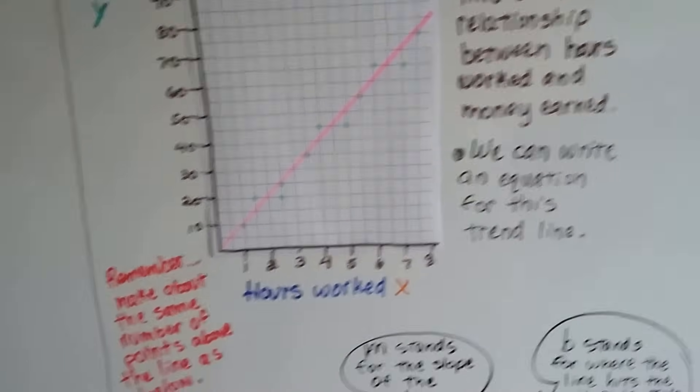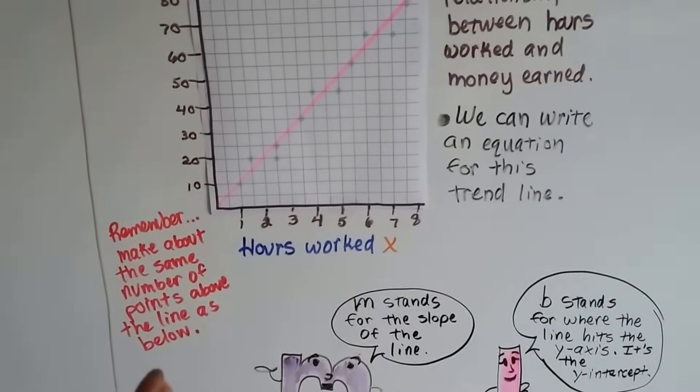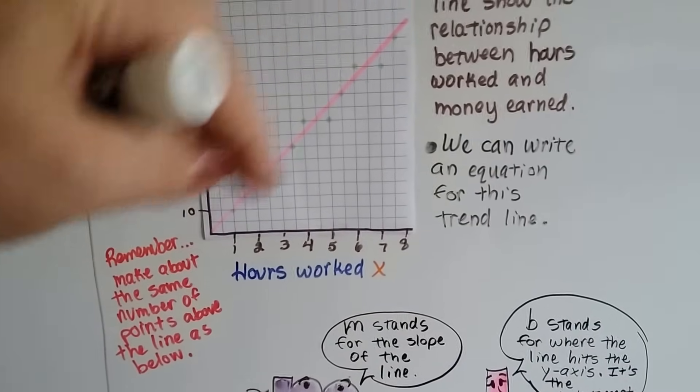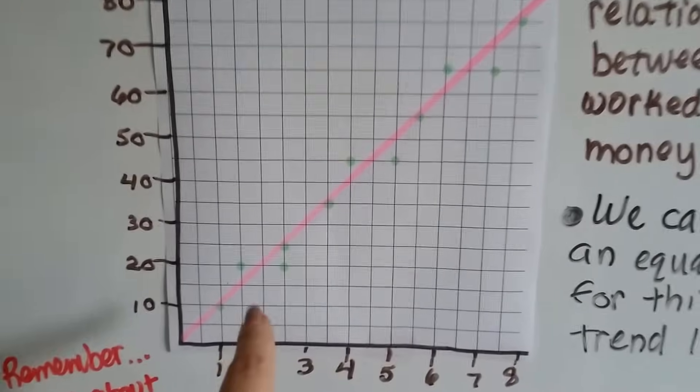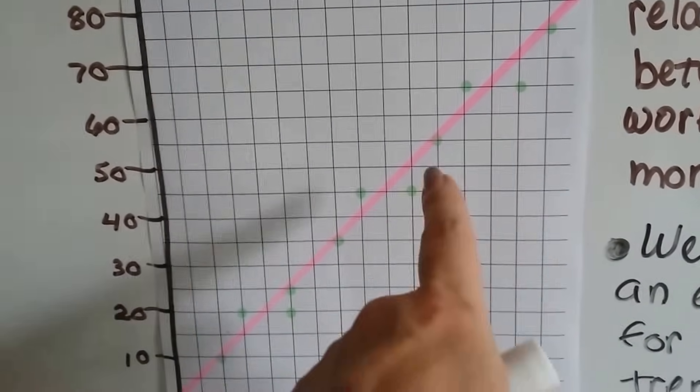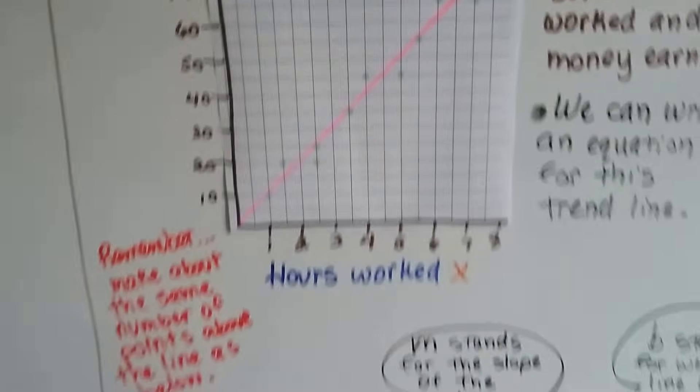I'm going to write an equation for this trend line. Just remember, make about the same number of points above the line as there is below the line. So if you look here on my green points, I've got 1, 2, 3 above the line and I got 1, 2, 3 below the line. See that?